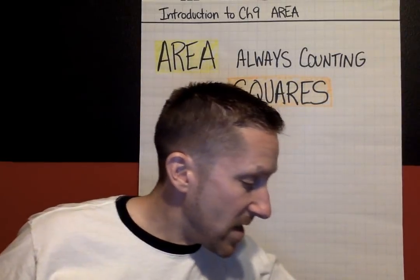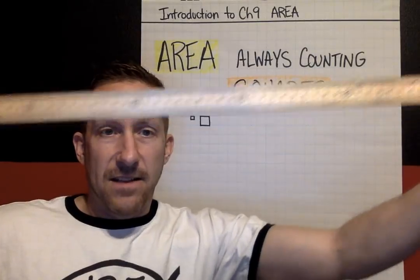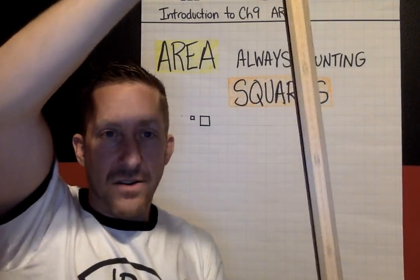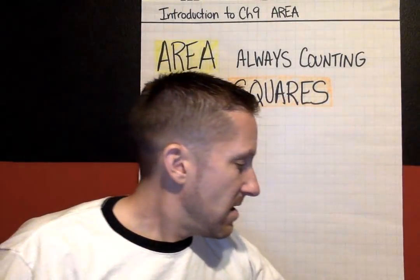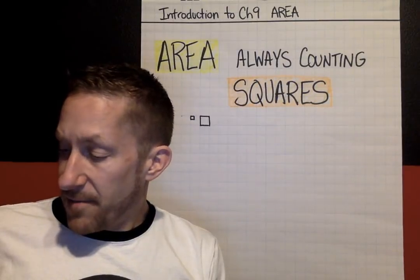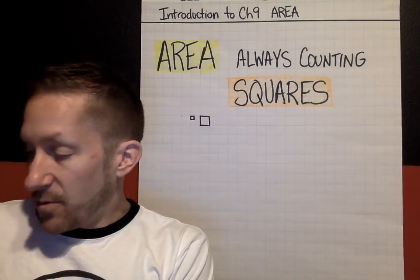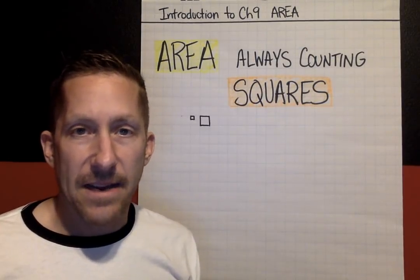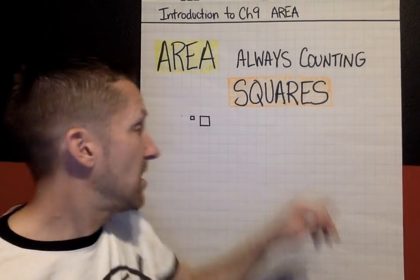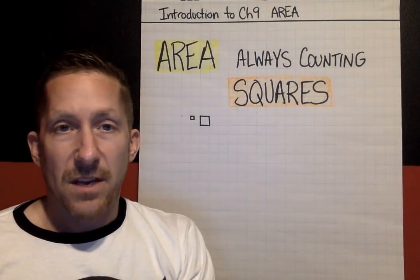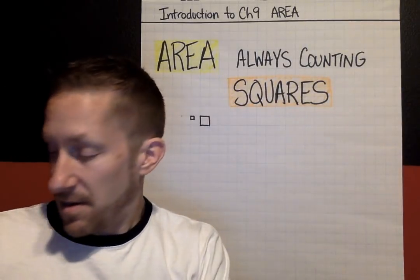They might be square meters — a meter stick on each side, that would be a square meter. If you are trying to measure the size of a city or a state, you might use square kilometers, where one side of the square is a kilometer, or square miles. So the squares can be very tiny up to very big, but the huge idea is you are always counting squares with area.